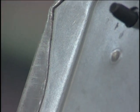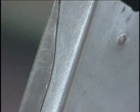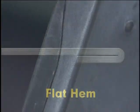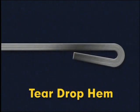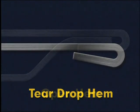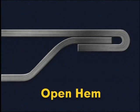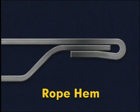There are four basic types of hems. Those include the flat hem, which can be used with materials having high ductility; the teardrop hem, which is used on materials lacking the ductility required to form the flattened hem without cracking; the open hem and the rope hem, which are used to join sheet metal parts together.